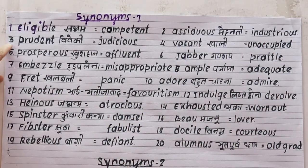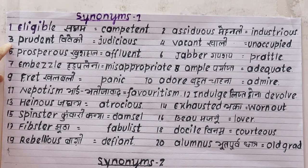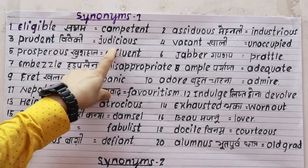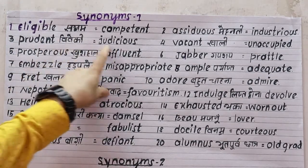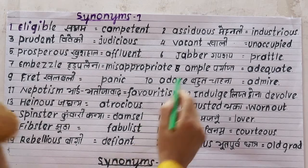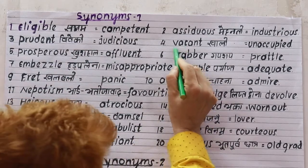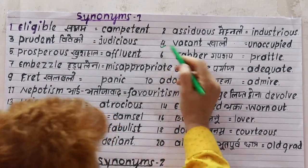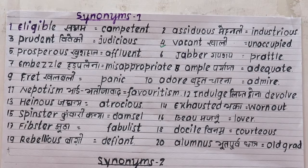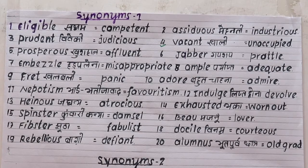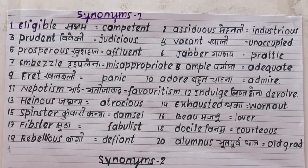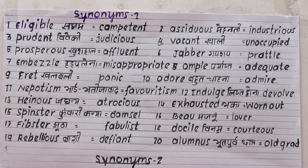Number three is 'prudent' and its synonym 'judicious' — same meaning. Number four is 'vacant', meaning empty or unoccupied. For example: this room is vacant, this room is unoccupied. The related noun is 'vacancy'.